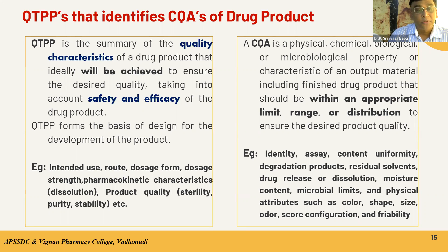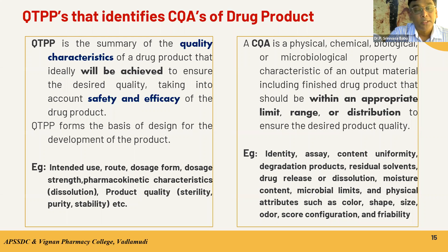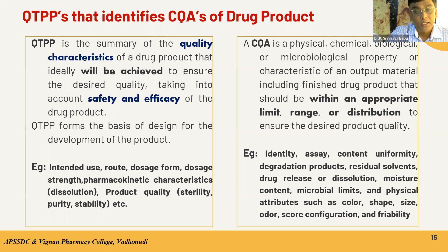The QTPP is the summary of quality characteristics of the drug product that will be achieved to ensure the desired quality, taking into account both safety and efficacy. When designing product development, we must select the appropriate route of administration, bioavailability, bioequivalence, dosage form strength, pharmacokinetic characteristics, and required product quality.